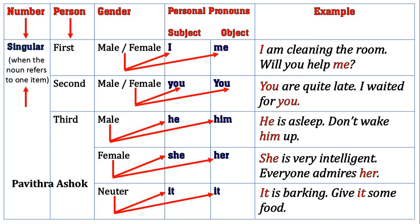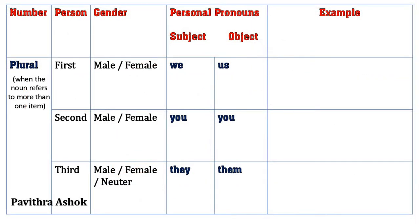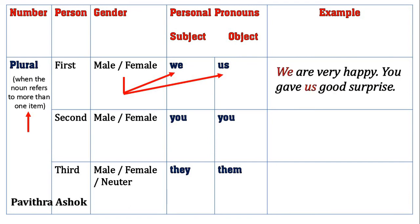We have understood three types of personal pronouns in singular number. Now we will move on to plural number. What is plural number? When the noun refers to more than one item. First, we will see first person personal pronoun in plural number. For male and female both, subject is we and object is us. For example: 'We are very happy. You gave us a good surprise.' You can see 'we' in the place of subject and 'us' in the place of object.